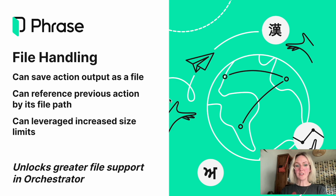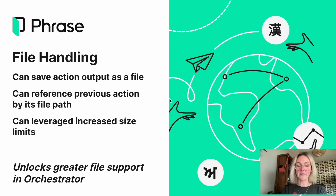File handling introduces greater file support in Orchestrator, so you can start using files as part of your workflow. Prior to file handling, you could only pass information as adjacent output. But what does this mean? You were limited by its file size, and because you were passing the output as a string, certain actions were not available to your Orchestrator workflow because there was no file path to reference.